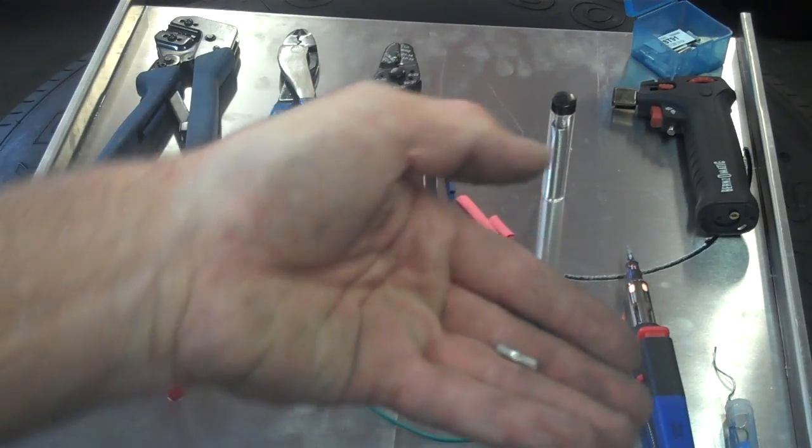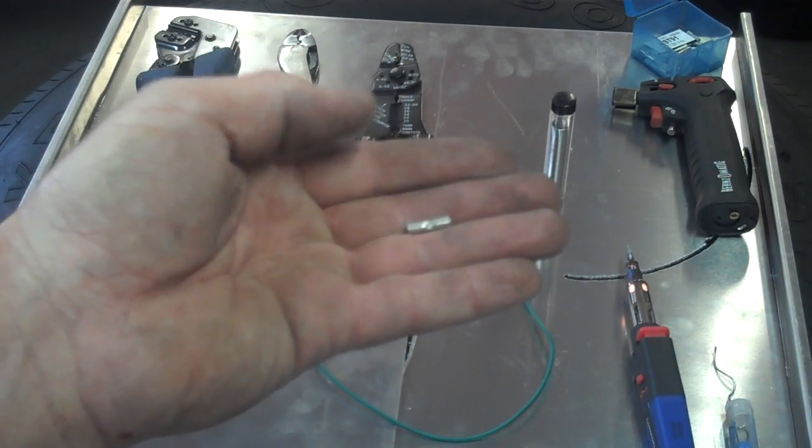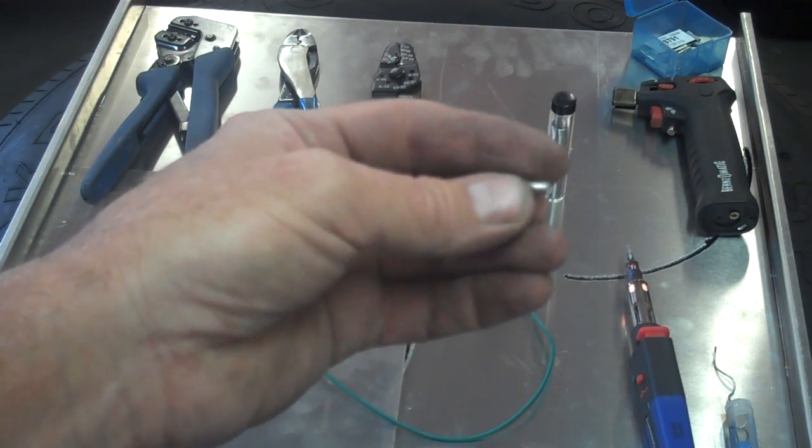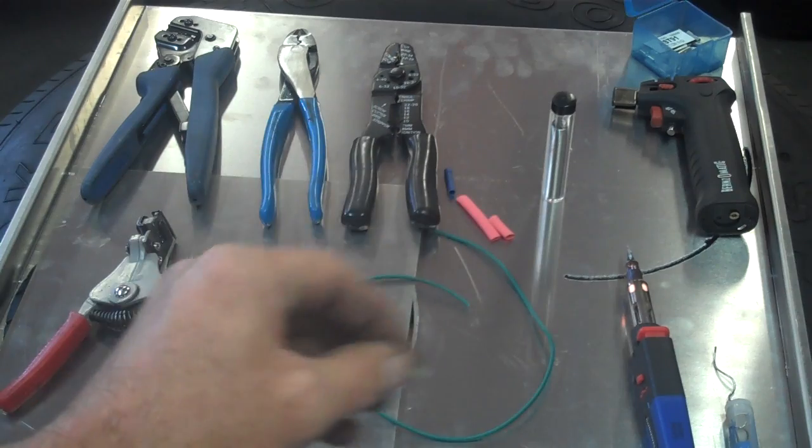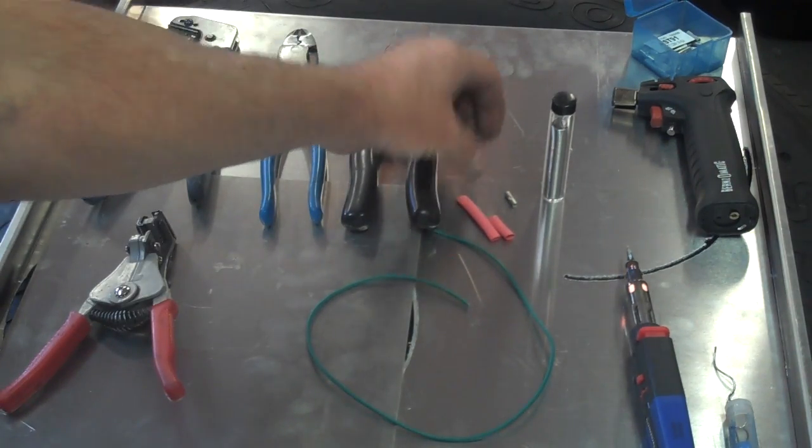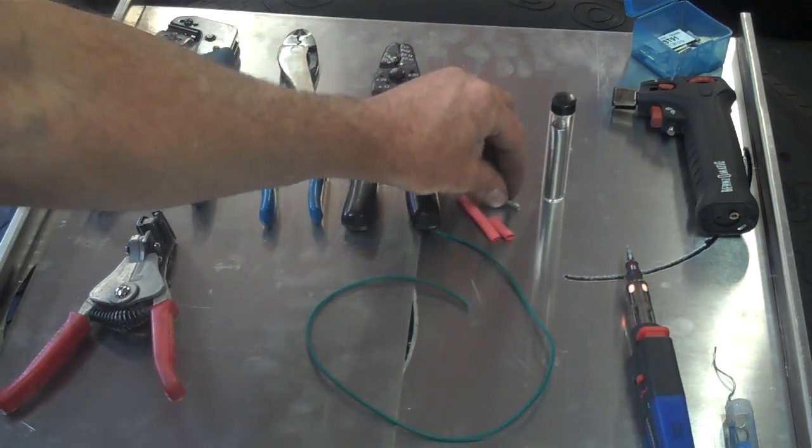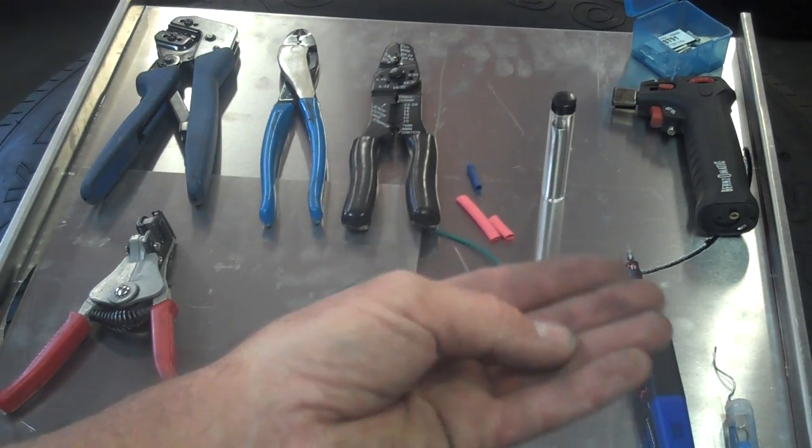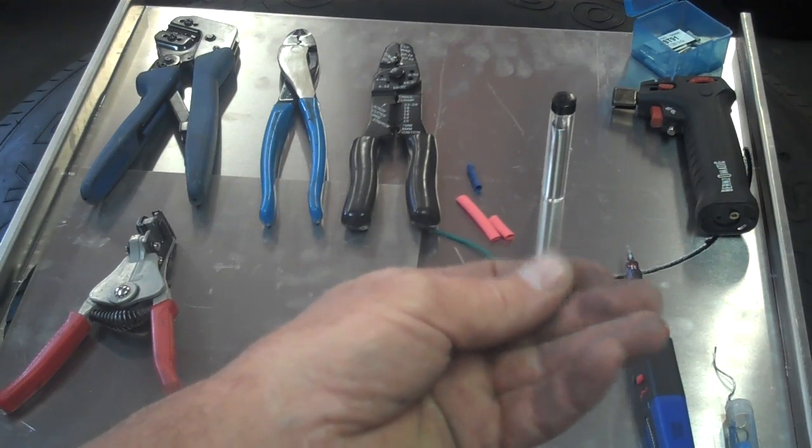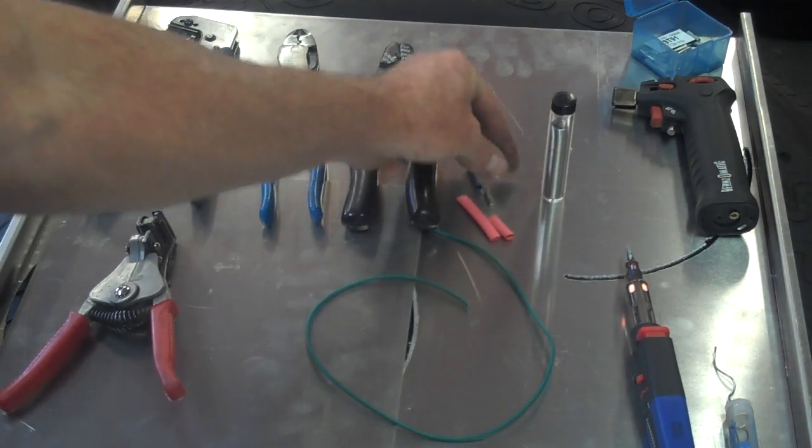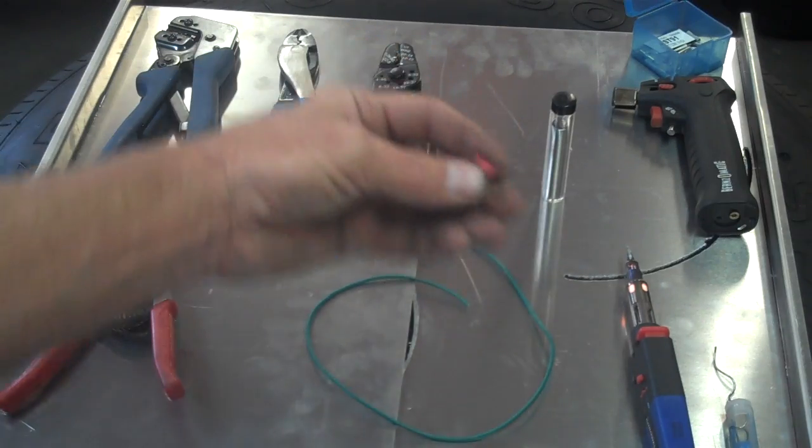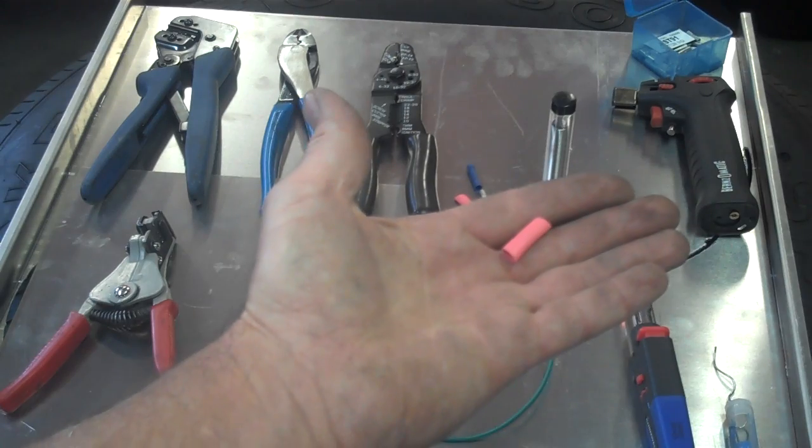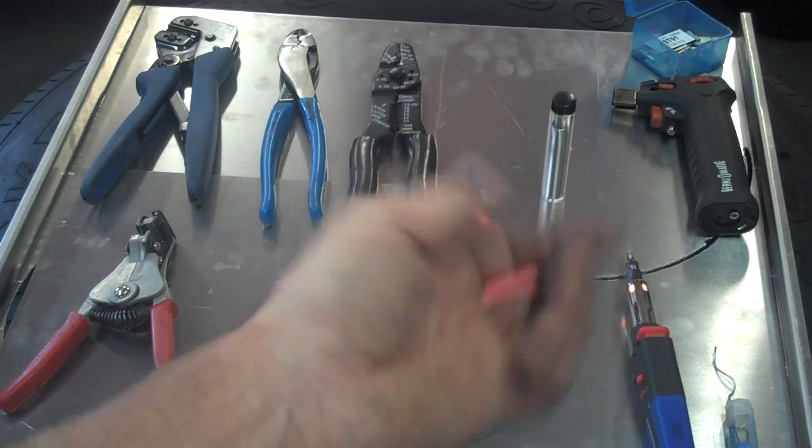Right here is a non-insulated connector. This connector will make a very good connection, but it's a little more of a pain to work with than the insulated butt connector. When we're working with these, we have to keep in mind that we need to keep any water or moisture from being able to enter the connection. That means when we're finished making the connection, we have to use a piece of shrink tubing like this to seal that connection against the intrusion of moisture.